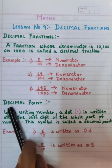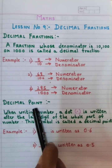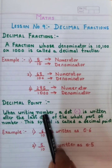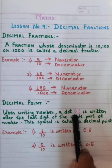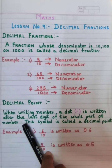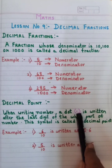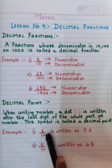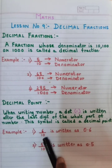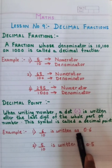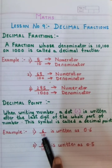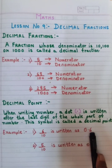Now we will come to the topic of decimal point. To show any place of a fraction we use a decimal point. When writing a particular number we use a dot after the last digit of the whole part of the number. For example, 6 upon 10 — my number is 6 but the denominator is 10. I have only one zero, so I have to put a decimal point before one digit. This is written as 0.6.